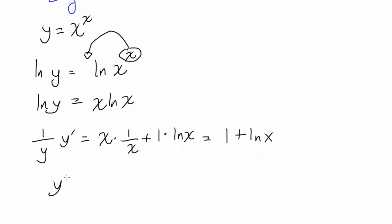So our y prime is going to be y times 1 plus natural log of x. And we want to write this in terms of x. So that's x to the x, y was x to the x to begin with, times 1 plus natural log of x.